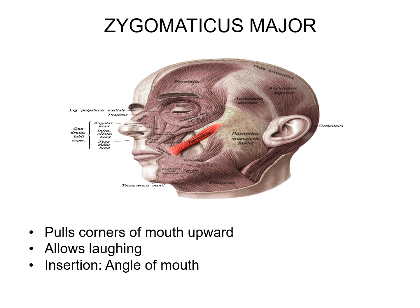The next muscle is the zygomaticus major — your main smiling muscle, with the origin right on that zygomatic bone, hence the name. The insertion is at the angle or corner of your mouth. Remember the insertion is the part that moves, so this muscle draws up toward the origin and helps you smile and laugh. If you're fake smiling all day and your cheeks start to hurt, this is the muscle that gets fatigued.